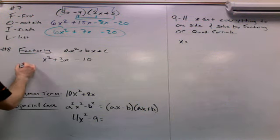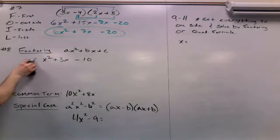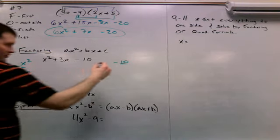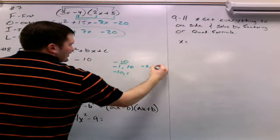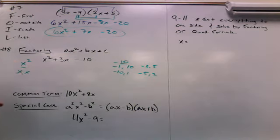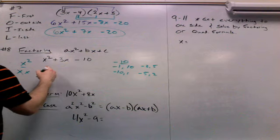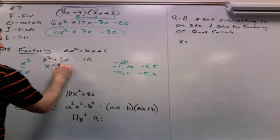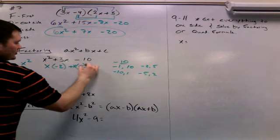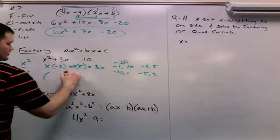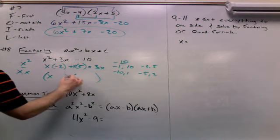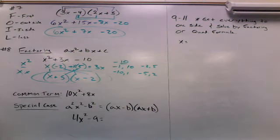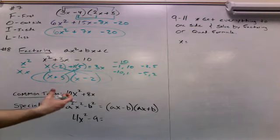For factoring ax squared plus bx plus c, you've got to find the factors of the ax squared term and the factors of c that add to the middle coefficient. Our ax term is x squared and our c term is negative 10. The factors of x squared are x and x. The factors of negative 10 are: negative 1 and 10, negative 10 and 1, negative 2 and 5, negative 5 and 2. Since it's negative 10, one factor has to be positive and one negative. We need the combination that adds to 3, which is negative 2 and 5: x times negative 2 is negative 2x, x times 5 is 5x, and those add to 3x. So the factored version of x squared plus 3x minus 10 is x minus 2 times x plus 5. This may take trying multiple combinations, but you can always FOIL back to check.